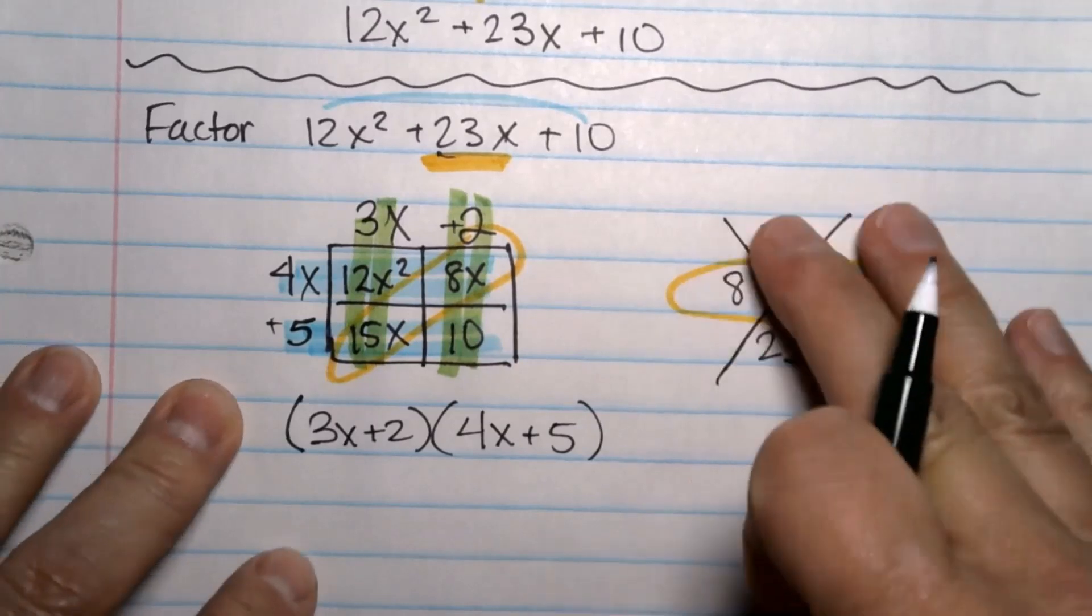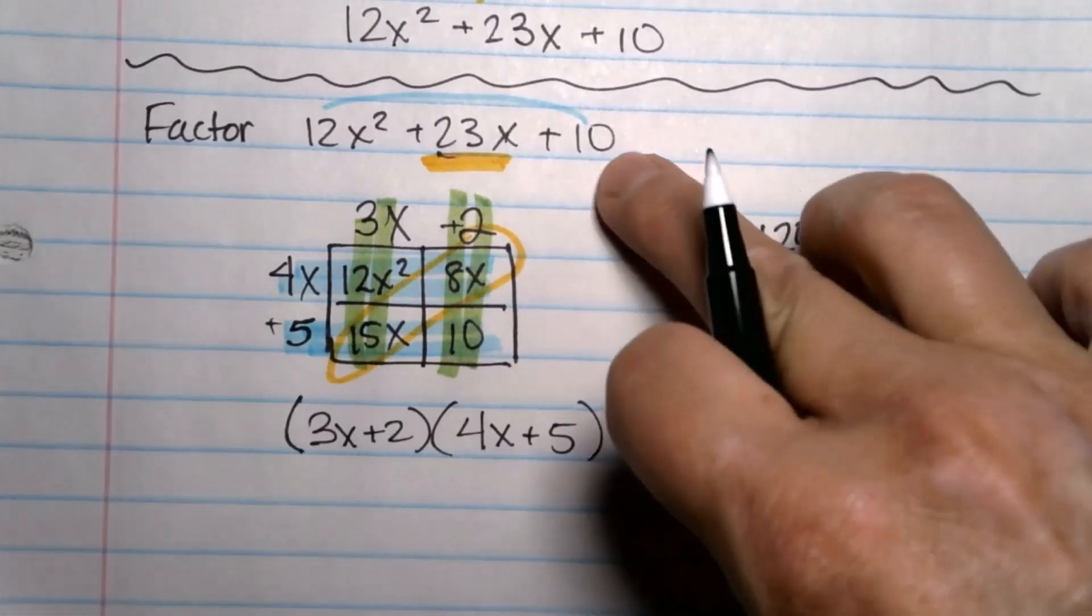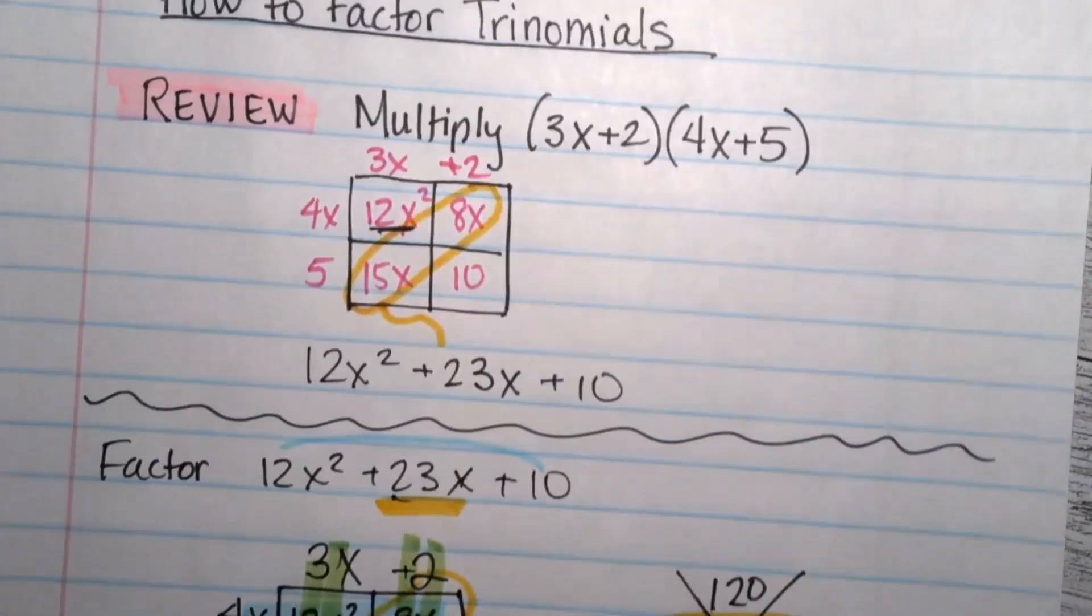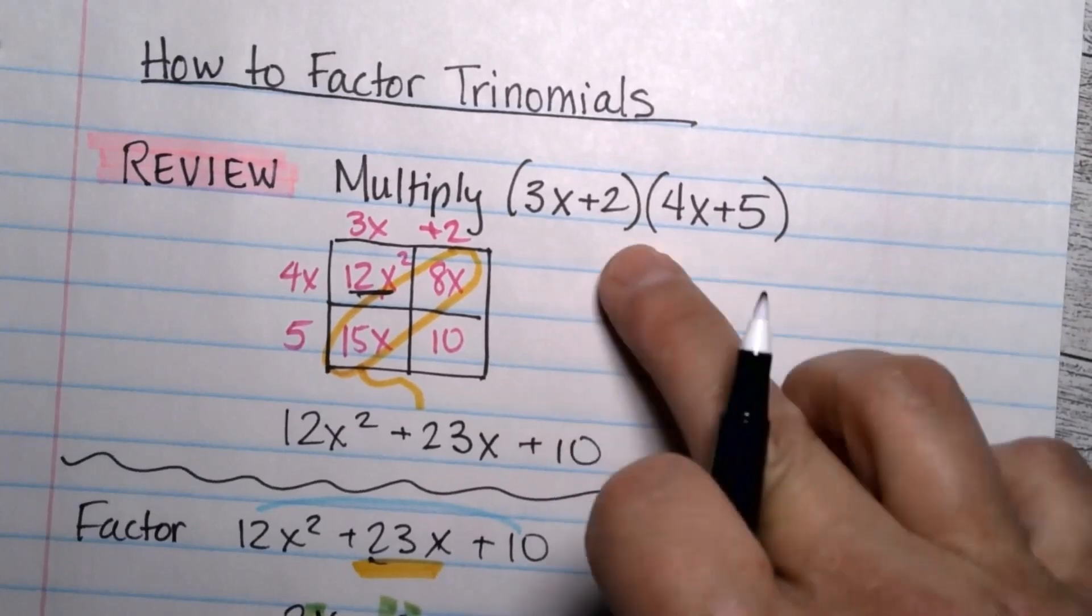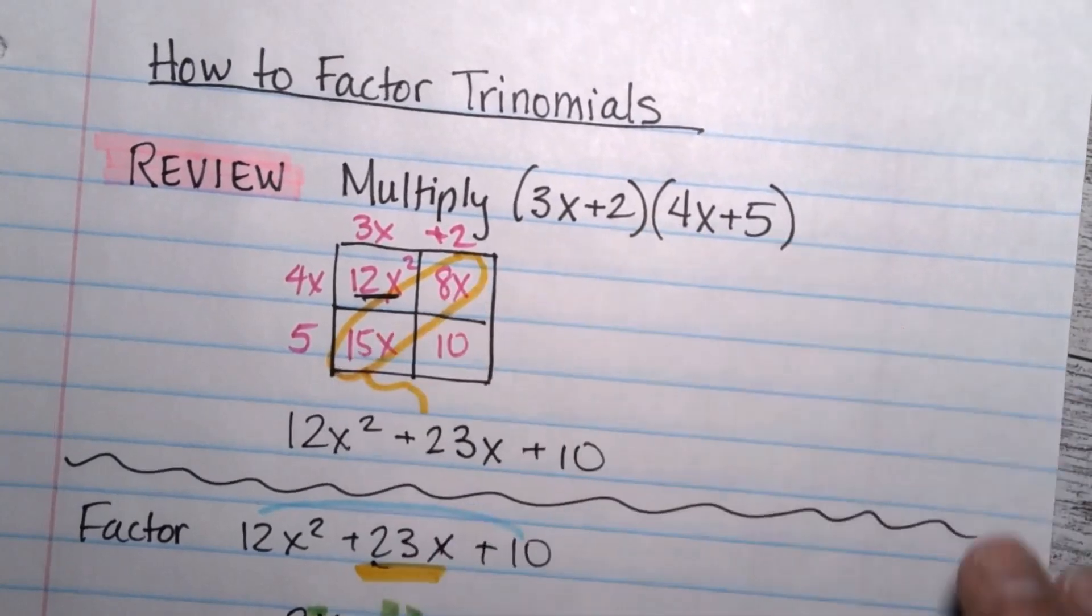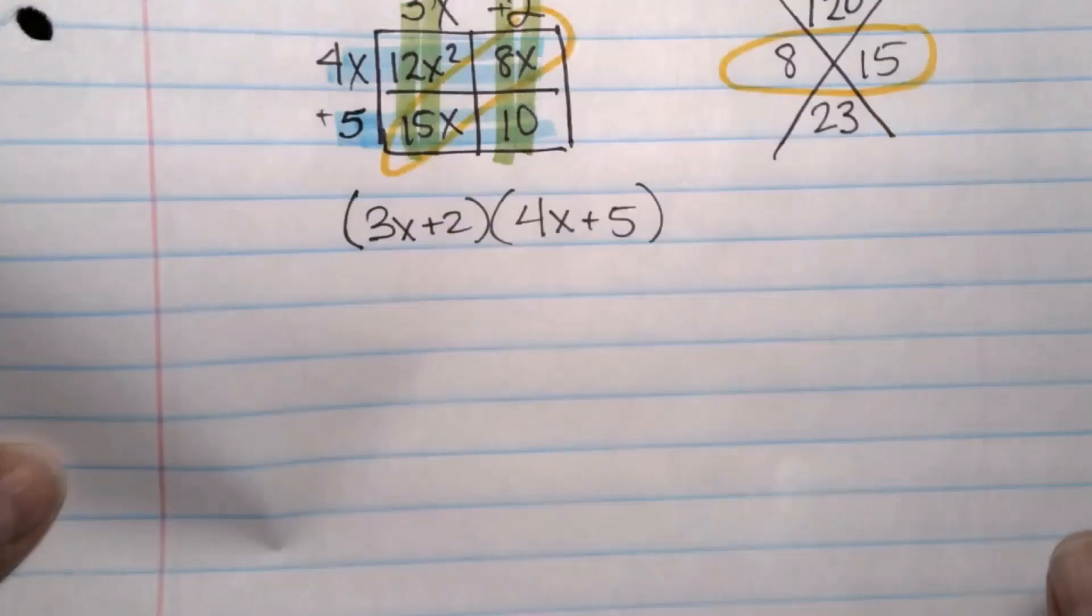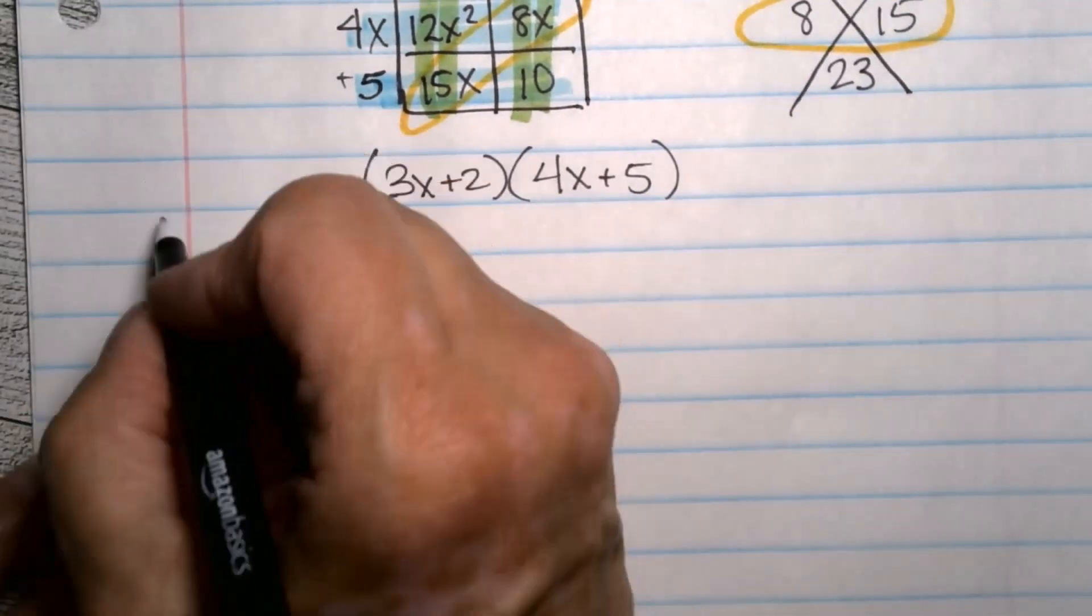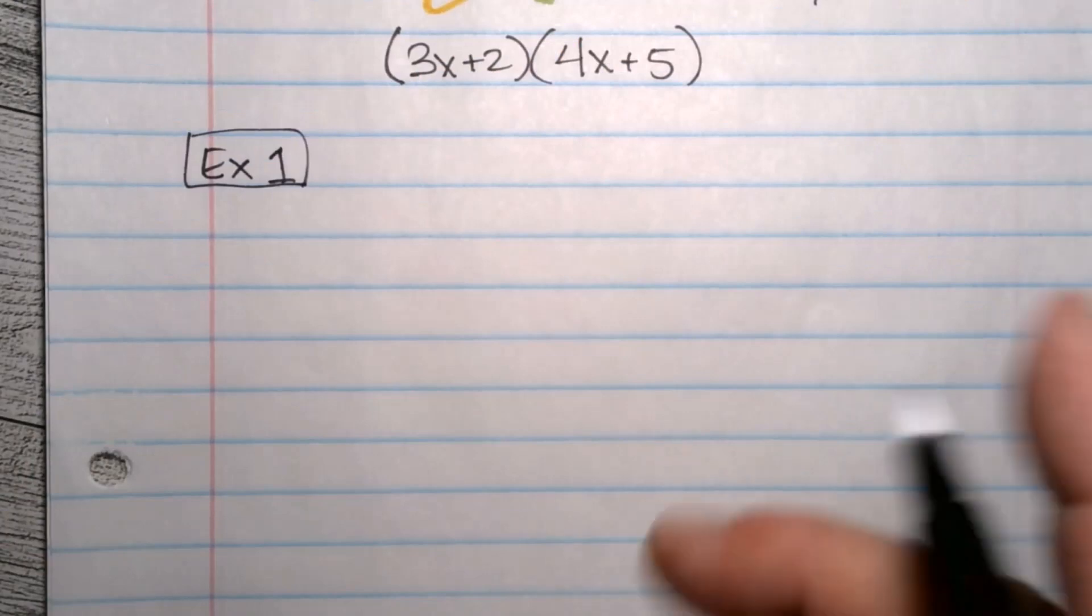When you are factoring, you are breaking your answer apart back into what you started with when we multiplied. The problem is, is you don't know what these middle pieces are going to be all the time. That's one. That's how to do it. Let's work some examples so you can see some more problems. If you're in my class, all of this stuff needs to be in your notes and I'm going to be going through it quickly.